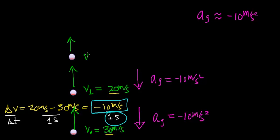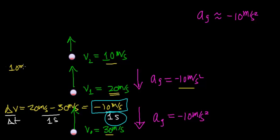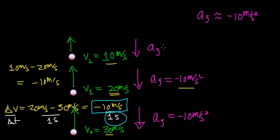After one more second — two seconds total — the velocity goes from 20 meters per second to 10 meters per second, because the force of gravity is changing the object's velocity by 10 meters per second every single second. The change in velocity is 10 minus 20, which equals negative 10 meters per second. Every second the ball moves upward, the velocity changes by 10 meters per second, and the acceleration due to gravity remains negative 10 meters per second squared.